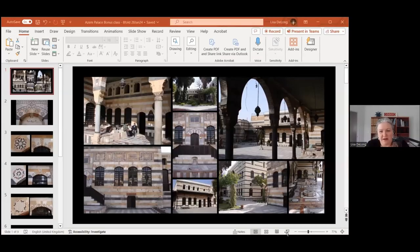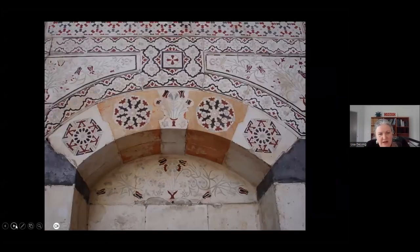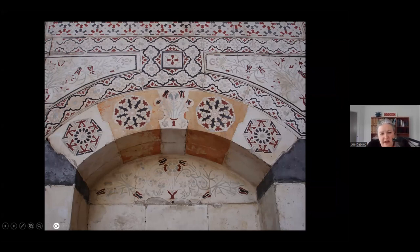Let me just orient you a little bit to the pattern that we will be looking at today. If you have joined us for any other classes in the Azam Palace series you will be familiar with these glimpses of some of the courtyards within the palace complex. You can see the beautiful striped multi-colored stone, some of the lines of decorations, and particularly the roundel decorations that are arching over the doorways and windows of the palace. We are going to be looking at an eightfold design that is setting up a relationship between a central eightfold motif and a ring of octagons.